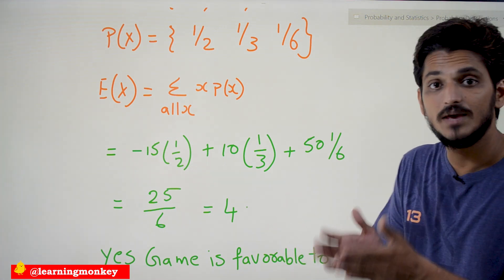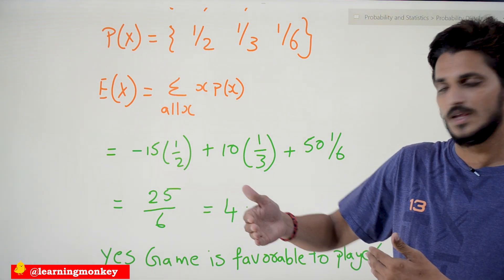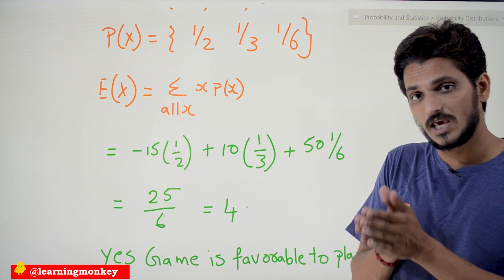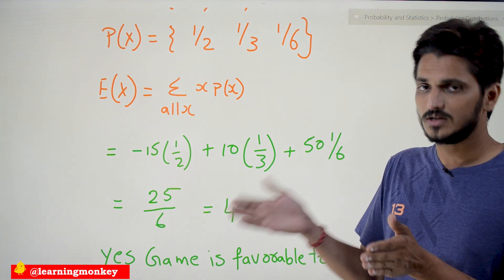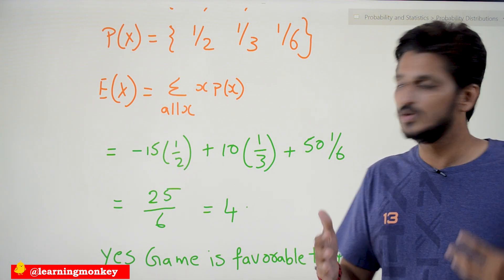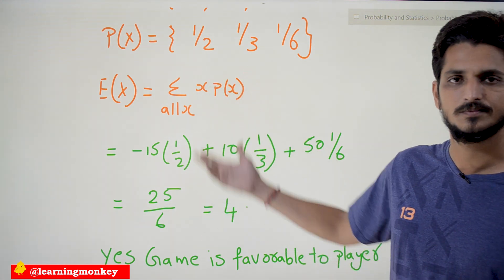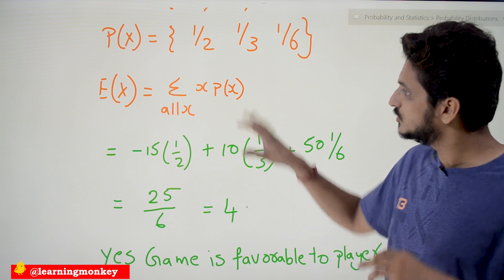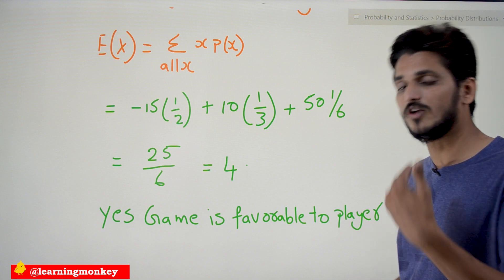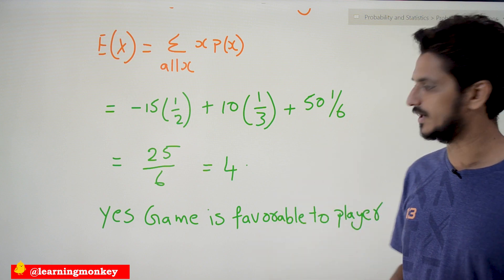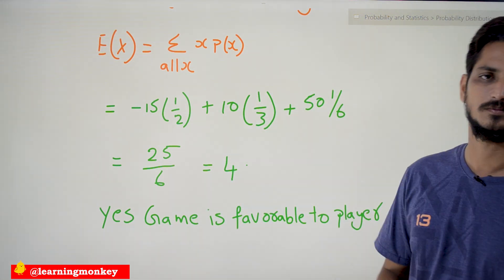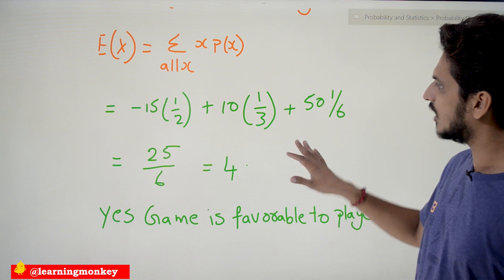A positive expected value means the game is on the side of the player. If the expected value were 0, it would be break-even — not favorable to either the player or the gaming department (the type of game you see in casinos). Since the expected value here is positive, the game is favorable to the player. This is how we use expected value to determine whether a game favors the player or the gaming department.